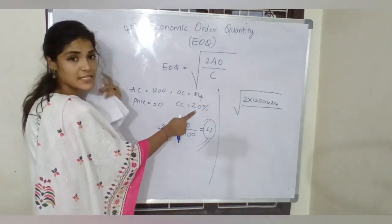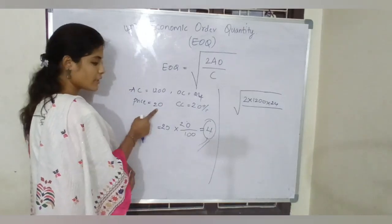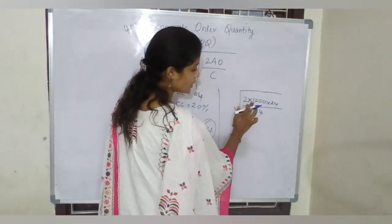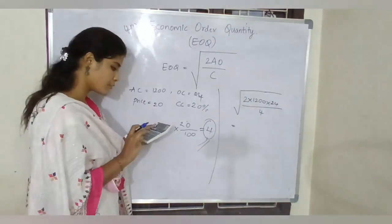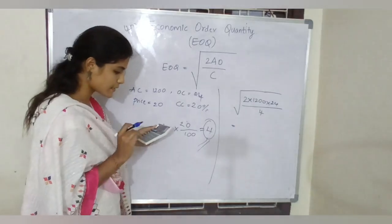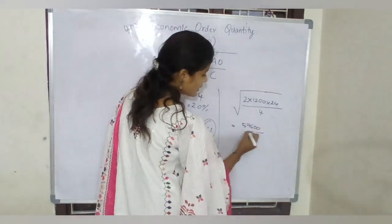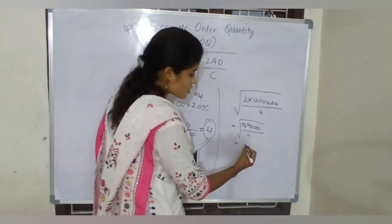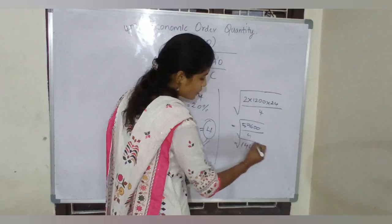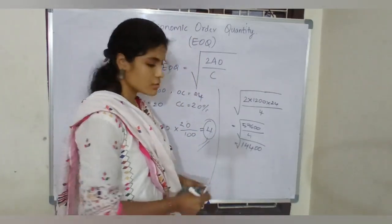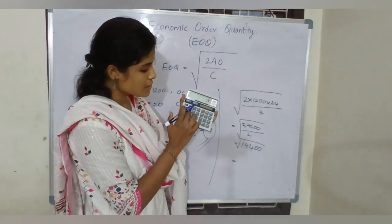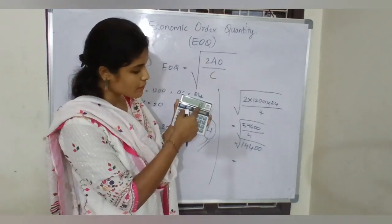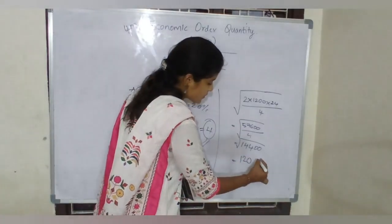Because carrying cost was given as a percentage, we converted it into a numerical number using the price: 20 into 20 divided by 100 equals 4. So, 2 into 1200 into 24 equals 57,600. Divided by 4 gives us 14,400 under root. Type 14,400 in your calculator and press the root symbol, and you get 120.